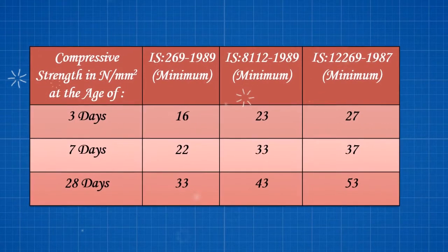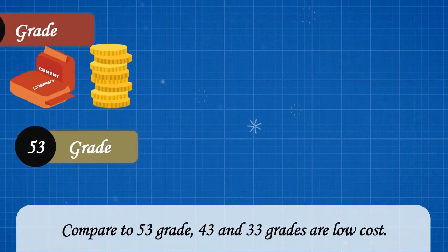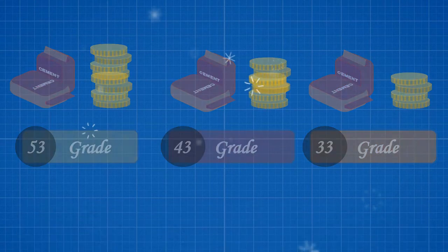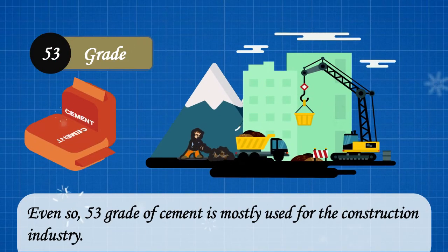The table displayed on the screen shows the compressive strength of different grades of cement in different duration. Compared to 53 grade, 43 and 33 grades are low cost. Even so, 53 grade of cement is mostly used for the construction industry.